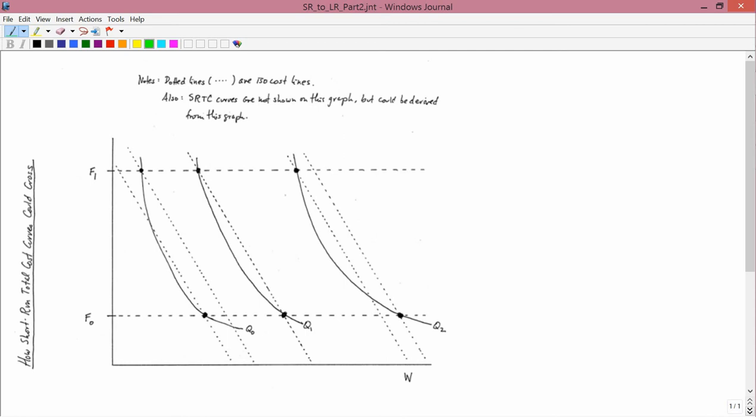The purpose of this graph, which comes from the same set of class handouts that we referred to several times earlier, is to show how short-run total cost curves could cross, as it says on the left running vertically up and down the screen.